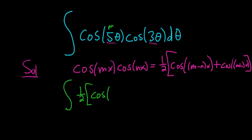So m here is 5. And n here is 3. So first we subtract them. So m minus n. So 5 minus 3 is 2. Plus.